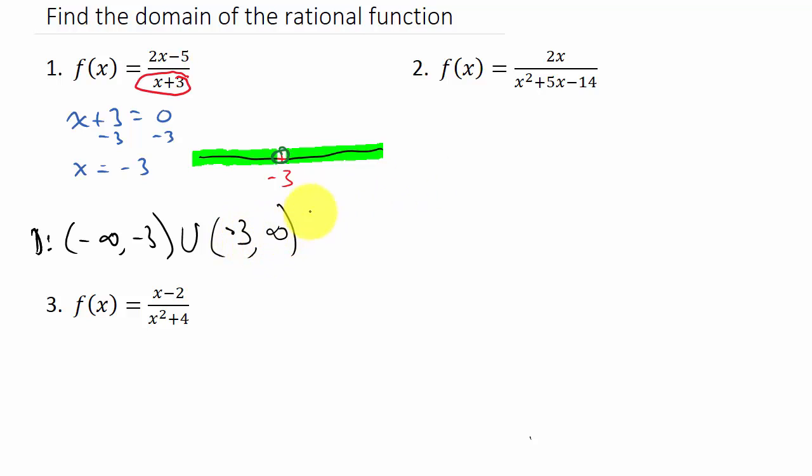Let's take a look at the second problem. Same thing as the first one. The denominator cannot be 0, so let's find out where it equals 0. We just take x squared plus 5x minus 14, set it equal to 0, and so we have to factor.